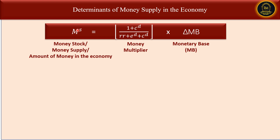We can say that money stock in the economy depends upon the money multiplier and the monetary base. This monetary base is also called high-powered money or reserve money. Change in money stock is caused by two factors: the money multiplier and the monetary base. If there is an increase in the monetary base, it will lead to an increase in money supply; if there is a decrease, it will lead to a decrease. Any change in the monetary base done by the central bank — that is RBI, the Reserve Bank of India — is going to impact the money supply in the economy.